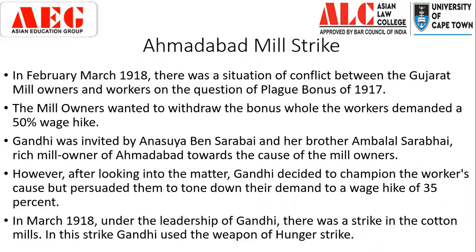By this time the workers were not part of any formal association or union. The workers who were mostly residing in Ahmedabad decided they would not work until the mill owners met their demands. Gandhi was invited to intervene from the side of the mill owners. Anusuyaben Sarabai, a socialist and sister of rich mill owner Ambalal Sarabai, invited Gandhi to mediate between the workers and the mill owners. Initially invited by the mill owners' side, after looking into the situation Gandhi decided to take the cause of the workers, as their demands were more justified.